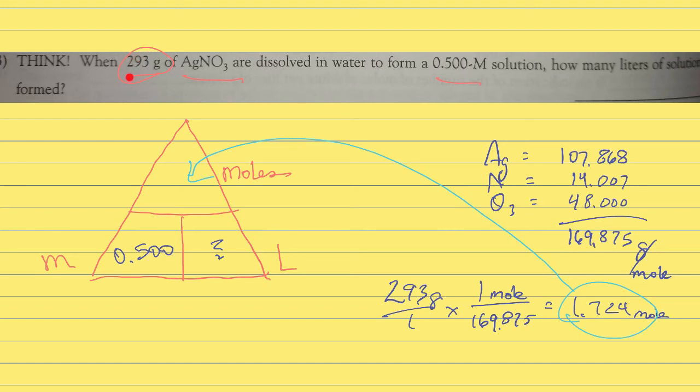The first thing we have to do is take the 293 grams and convert that into moles. I looked these up on the periodic table - you should check your table. The mass of silver, mass of nitrogen, and each oxygen is 16, so 16 times 3 is 48.